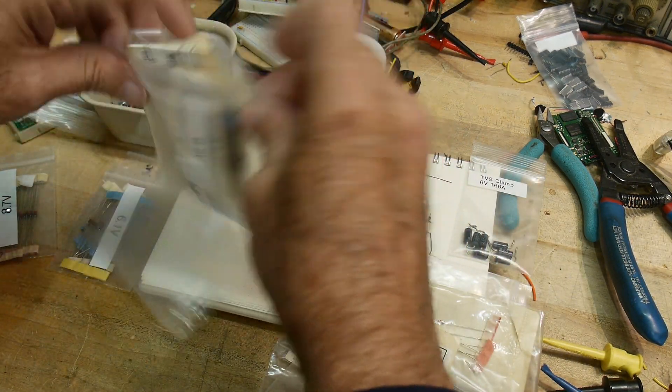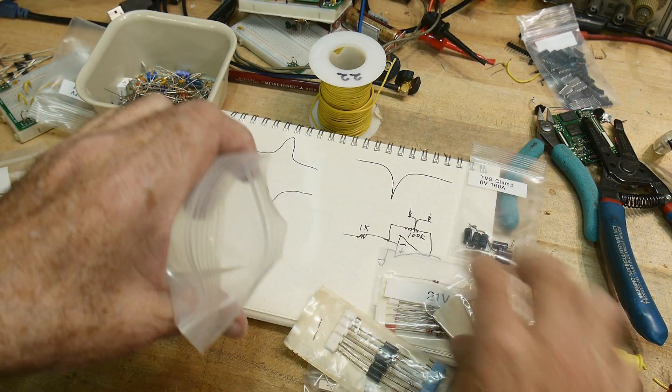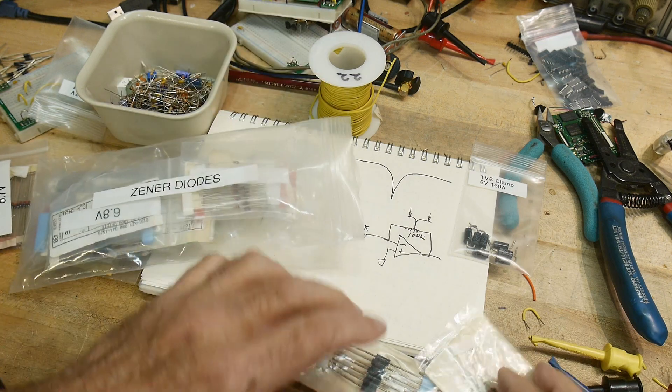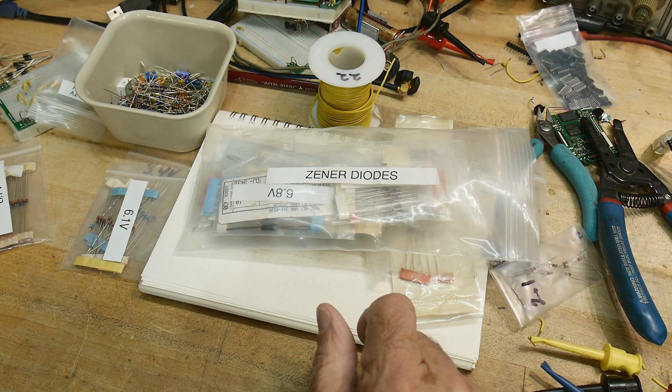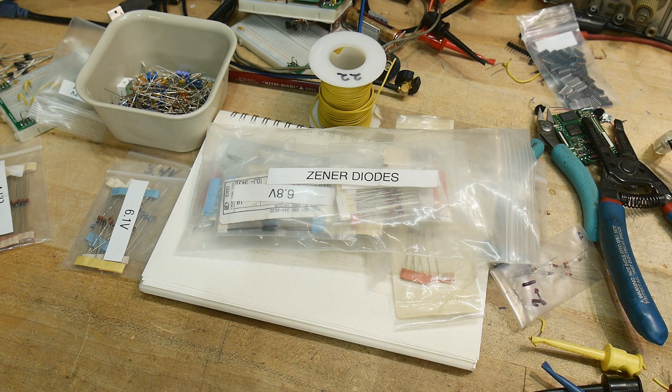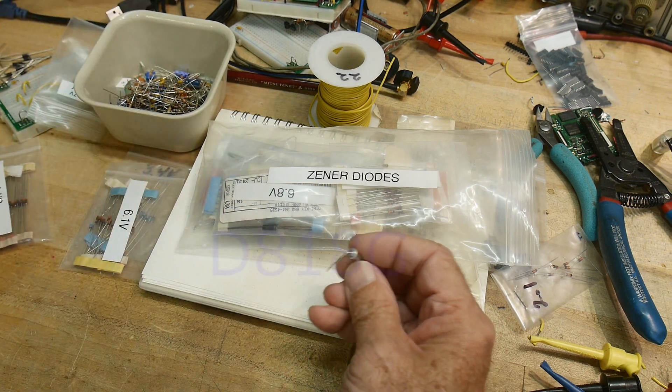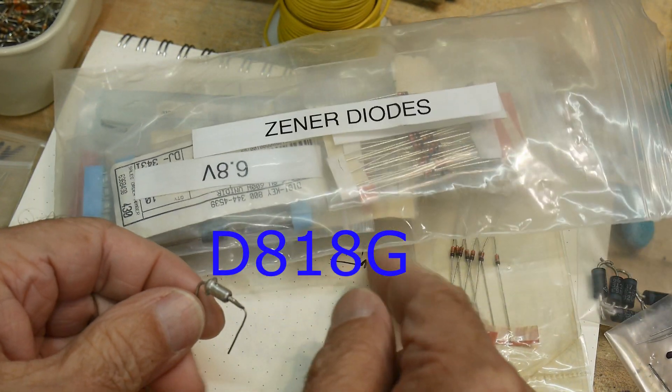I have lots of Zener diodes, and one of the Zener diodes I have doesn't act normal. Something's really weird about it. Let me find it here. It is this one, and it's a funny package. It is a Soviet transistor—I mean, a diode.